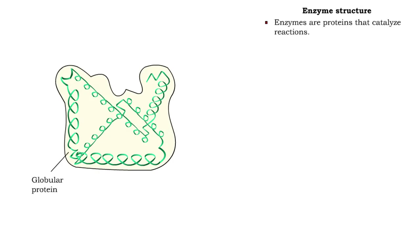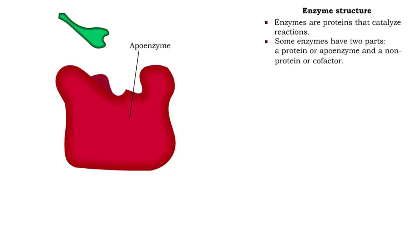Enzymes are special types of proteins that catalyze reactions. Some enzymes consist of two parts, the protein part, called the apoenzyme, and a non-protein part, called the cofactor.